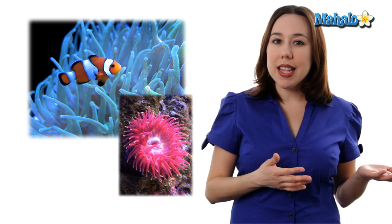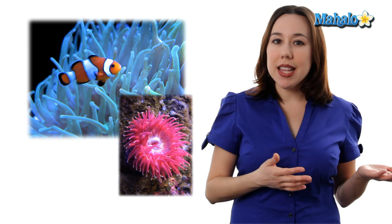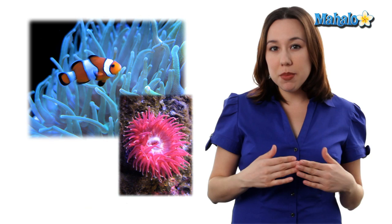A real-world example of this is anemone fishes and sea anemones. You remember Little Nemo? Well, those anemone fishes get a benefit. They get protection from the stinging cells of the sea anemone. The sea anemone is not hurt or benefited by this interaction though.